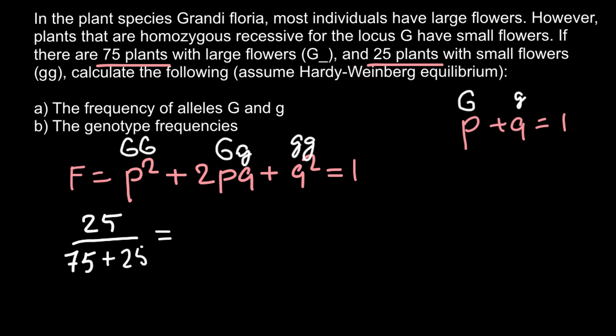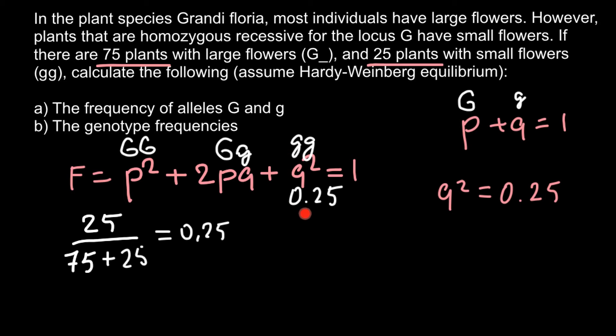This count is not yet a frequency — we have to find the frequency first. We divide 25 by the total number of plants: 75 (dominant phenotype) plus 25 (homozygous recessive) = 100. So the frequency of the recessive genotype is 0.25. This means q² equals 0.25 according to this part of the formula.